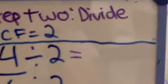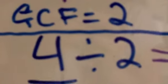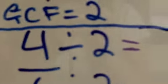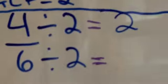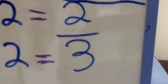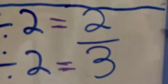Now on to step 2, divide. Since we found out that the greatest common factor of 4 and 6 is 2, divide 4 by 2 and 6 by 2. So 4 divided by 2 equals 2, and 6 divided by 2 equals 3. Since 3 is a prime number, it cannot be reduced anymore. So 2 over 3 will be your final answer.